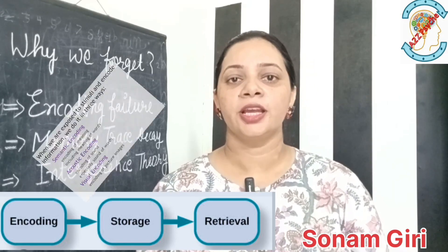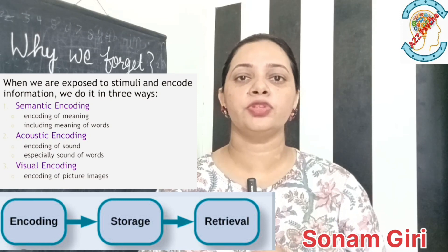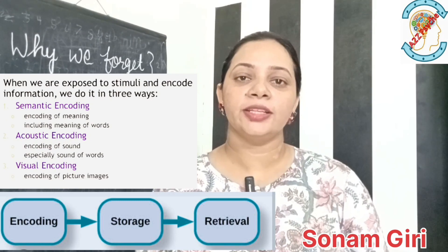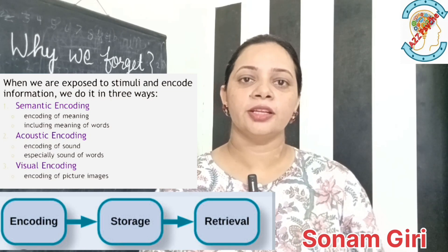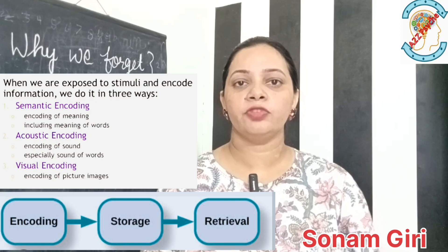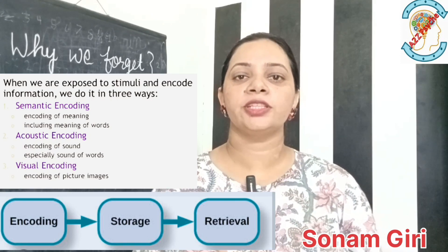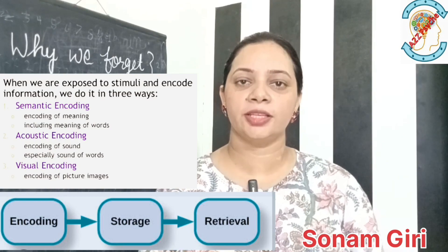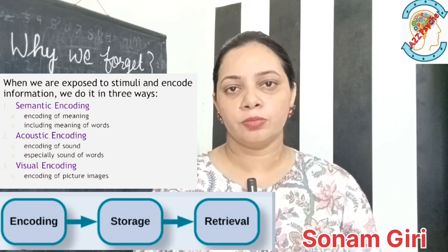For example, if our friend is on our side, then we forget to notice people. Because we have not given attention to what they are saying. That means we have heard something but didn't give it proper attention, so it remains unprocessed. So in memory processing, because we don't give attention, encoding failure happens — that means we forget it.